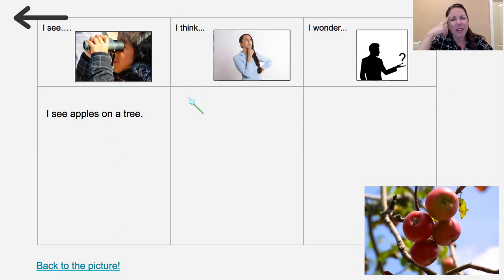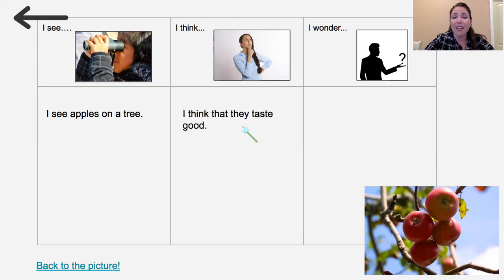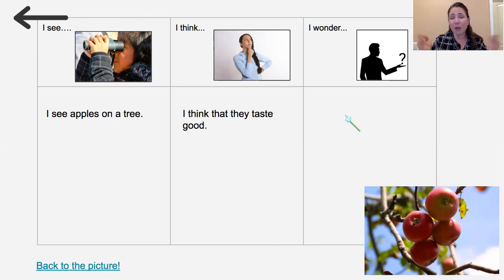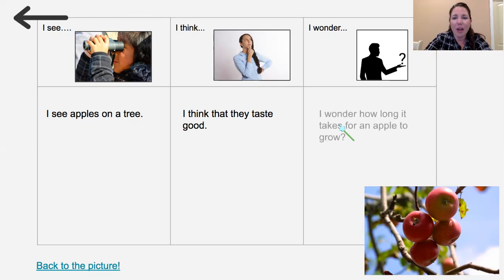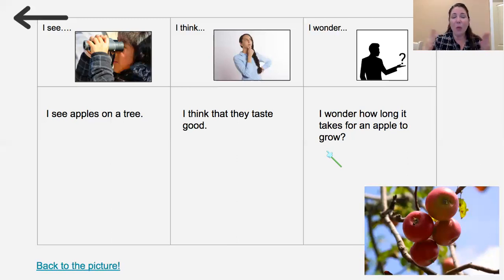What about thinking? What are you thinking when you look at this photograph? Well, maybe like me, you think that they taste good. And what about wondering? What questions do you have from looking at this photograph? As I was looking at this photograph, I wonder how long it takes for an apple to grow. So readers, let's take those things that we were seeing, thinking, and wondering about with us as we read our first article.